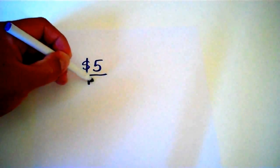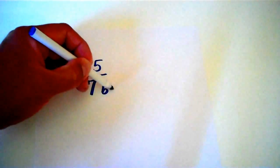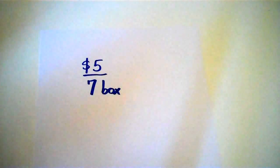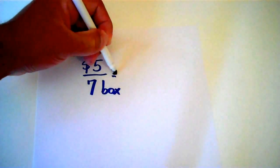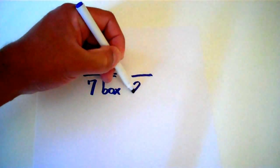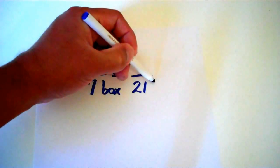In this video I'm going to show you how to solve a proportion. Now a proportion is basically a rate, such as in this example here, Jimmy makes $5 for every 7 boxes of cookies that he sells. So that's a rate. So the proportion side would be how much money would he make if he sold 21 boxes.